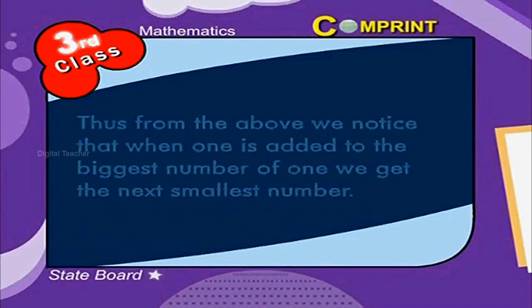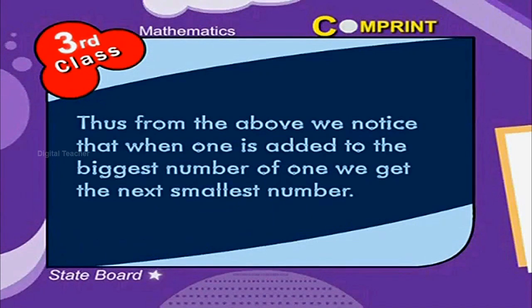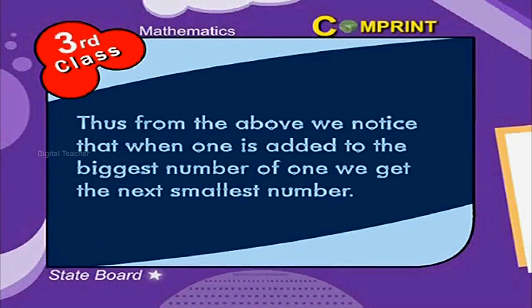Thus, from the above, we notice that when 1 is added to the biggest number of a digit, we get the next smallest number.